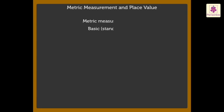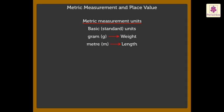Three basic units of the metric system are gram for measuring weight, meter for measuring length, and liter for measuring capacity.